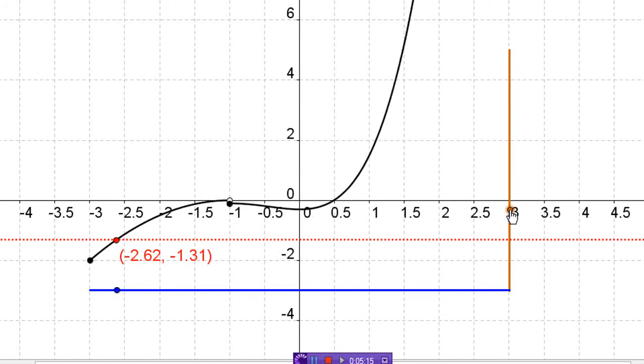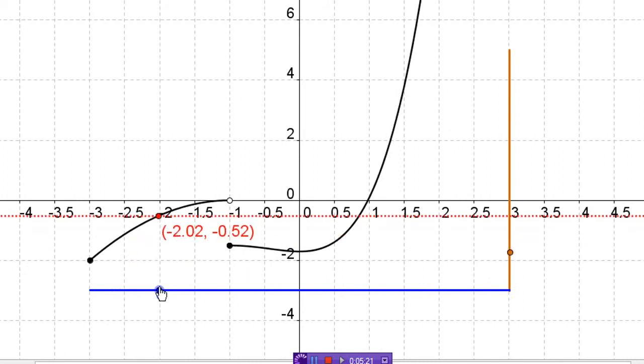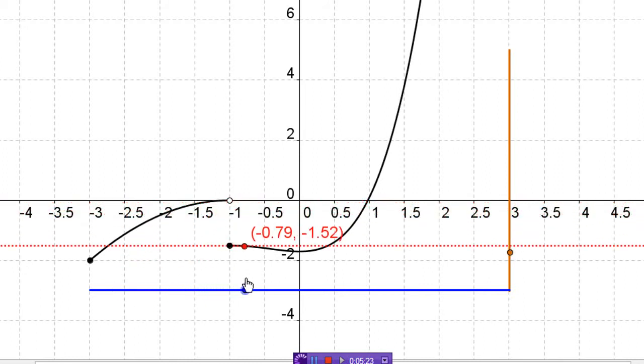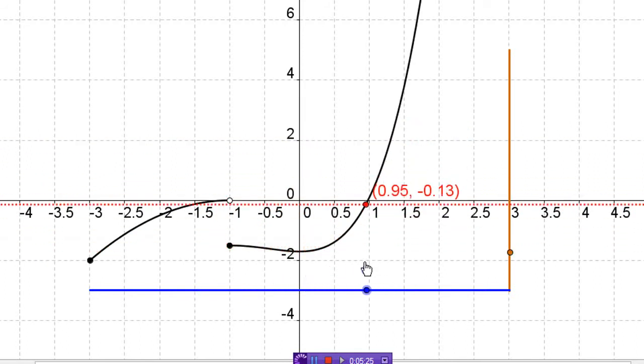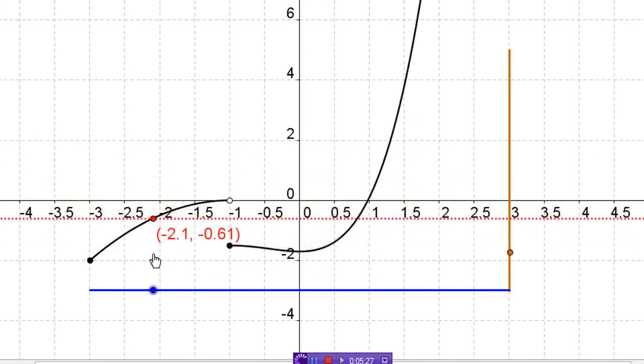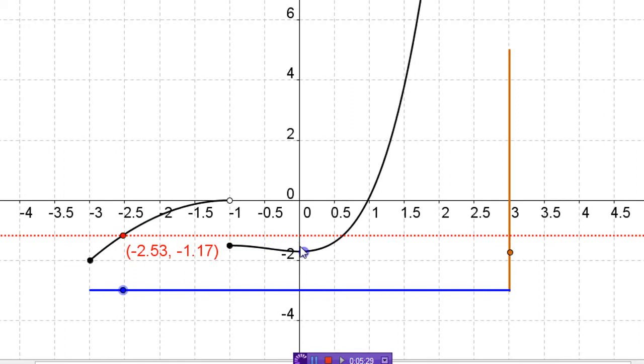It might, it might not be a continuous function and still cover all the y values. So it's only a kind of a one way, one way relationship. This one still covers all the y values even though there's a break, but the only way to guarantee that it covers all the y values is to know that this is continuous. That's the intermediate value theorem.